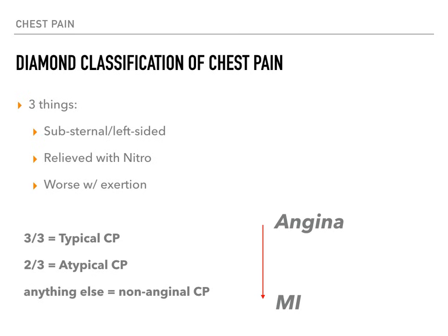This is extremely useful clinically. You will impress your attendings when you're rotating in internal medicine or in the emergency room if you can tell them that the patient is having typical or atypical chest pain. The Diamond Classification of chest pain is super high yield and really, really useful.